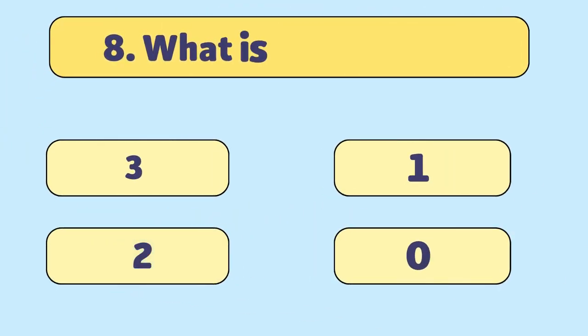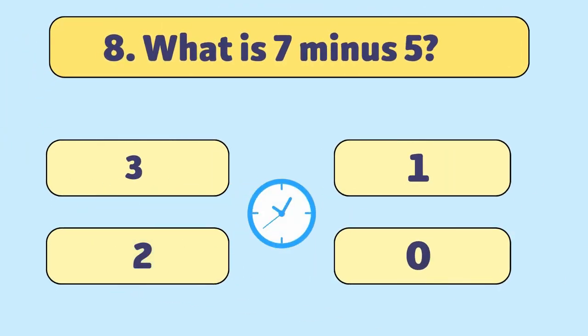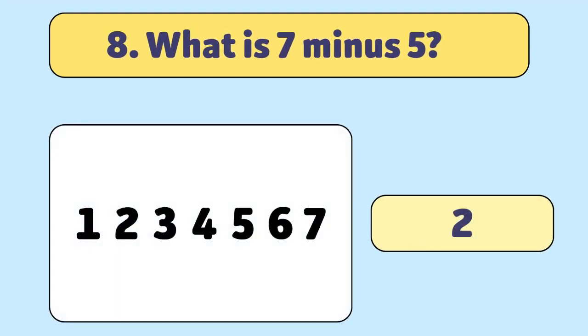What is seven minus five? Two. Take away five from seven and we get two.